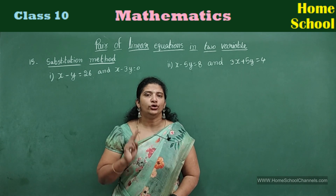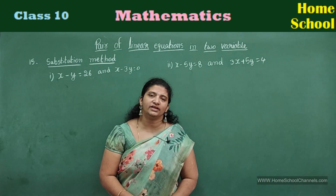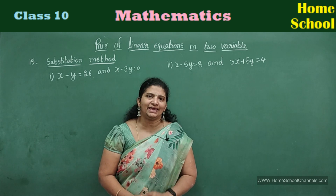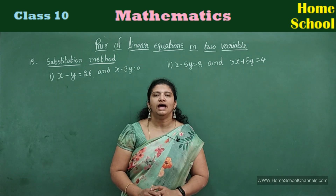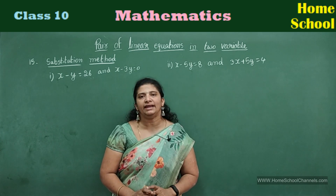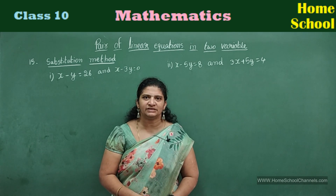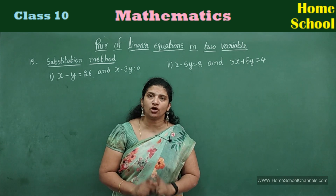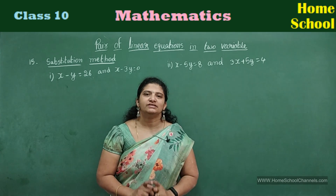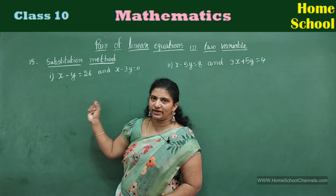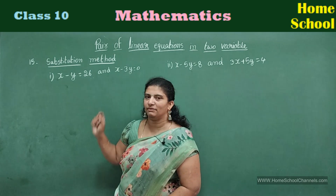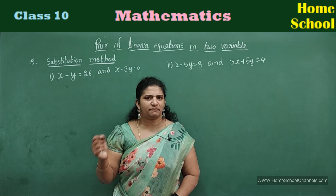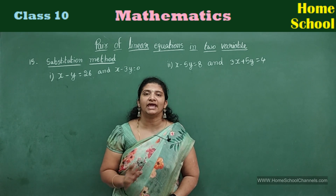Now coming to two marks, they will give you two equations — a pair of linear equations — and ask you to solve. There are four methods to solve any equations: substitution method, elimination method, cross multiplication method, and graphical method. All methods give the same answer. In a two-mark question, if they give you any two equations and ask to solve, you can choose any method of your own choice. But if they specify — solve by substitution method, or only elimination method, or only cross multiplication — then you choose that specified method. Otherwise, any of your choice.